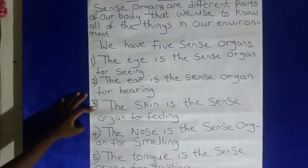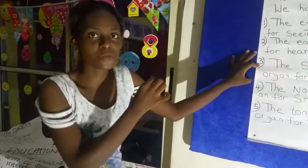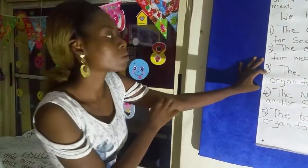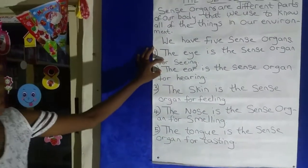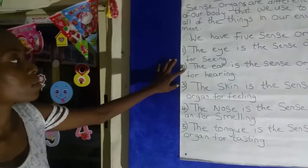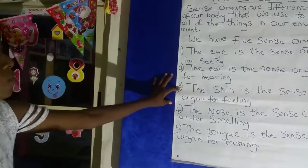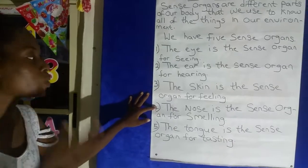And the next one is the skin. The skin is the sense organ for feeling. When someone touches you, you feel it — that's the sense of feeling. So the first is the eye for seeing, the second is the ear for hearing, and the third is the skin for feeling. Now the fourth one is our nose.